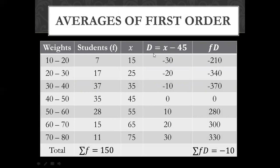Now let's make D. For making D I have supposed A value. What is A value? 45. Now the value of x minus 45. 15 minus 45, then minus 30. 25 minus 45, minus 20. 35 minus 45, minus 10. 45 minus 45, 0. 55 minus 45, 10. Then 65 minus 45, 20. Then 75 minus 45, 30.